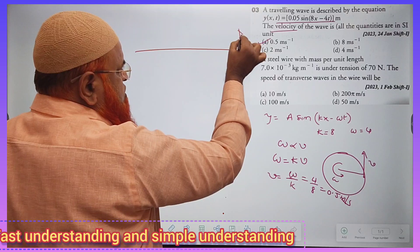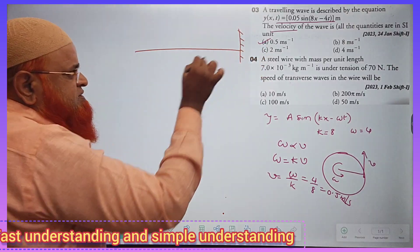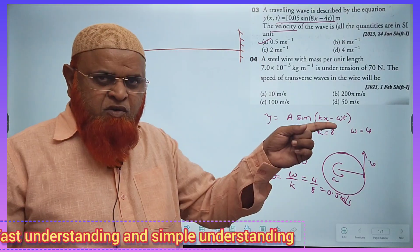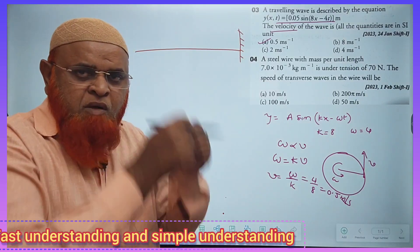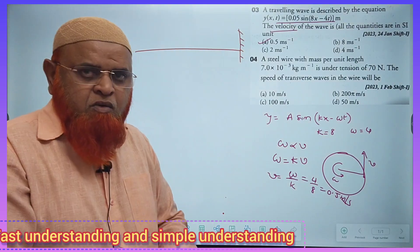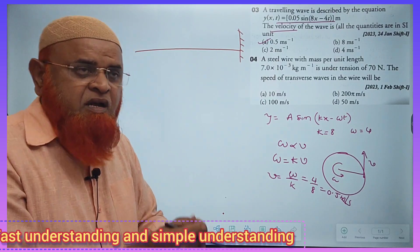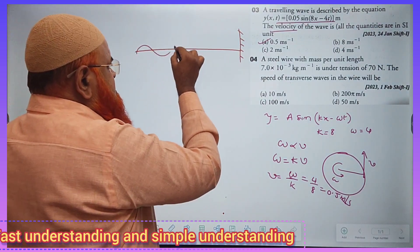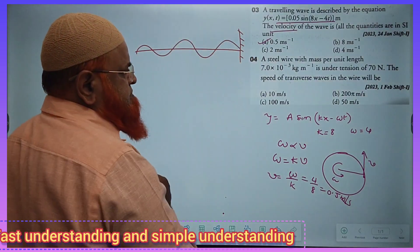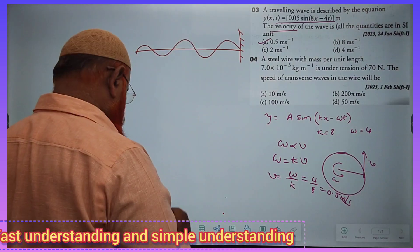Let us imagine this is a wall and rope is tied to a wall. You are going to make the rope move up and down. Then what happens? Continuously if you move the wave up and down, you can see that there is a wave which has been created.